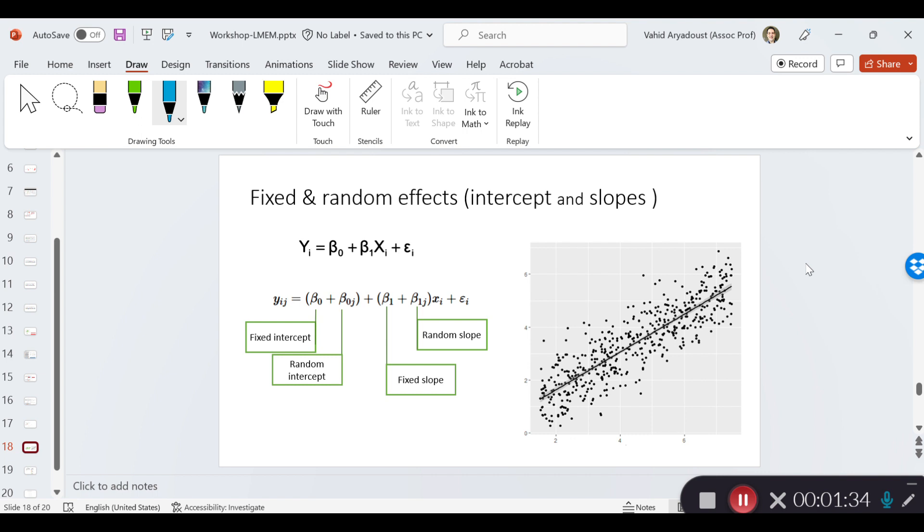This is a linear regression model in which the y or the dependent variable is being predicted by the intercept, which is the population intercept. So I'm going to write intercept or population intercept, which is different from the random intercept which I will discuss in a minute, as well as a slope. So this is basically the slope, a population slope. And of course there is an error which is represented by the eta.